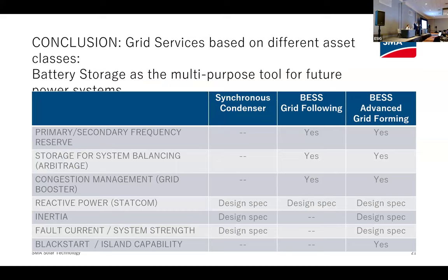Drawing close to the end of my slides, I want to contrast these advanced grid forming capabilities to the typical grid asset that we'd see trying to solve these stability problems on the network, which is a syncon. Syncons are usually designed for specific quantities of reactive power, inertia, and fault current — and that's all that they do. A battery storage plant, in contrast, can provide frequency control, arbitrage, and if you've heard of a grid booster, this is another use case for battery storage for transmission deferral. These are all things that can be monetized by the developer, in addition to those stability services. So we're stacking revenue streams in order to improve a project's economics.